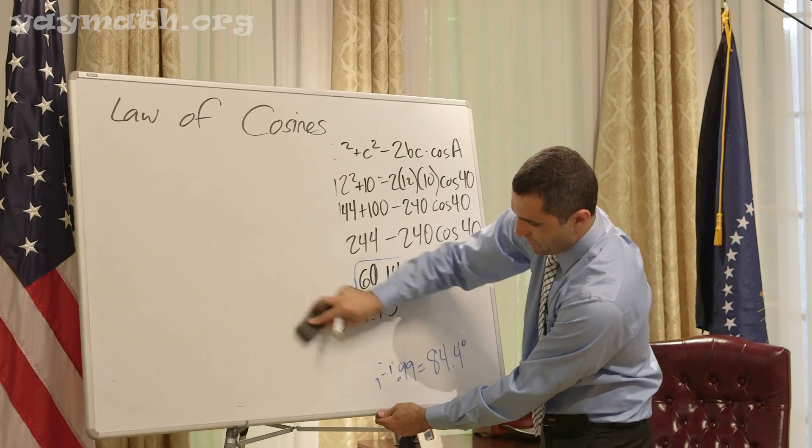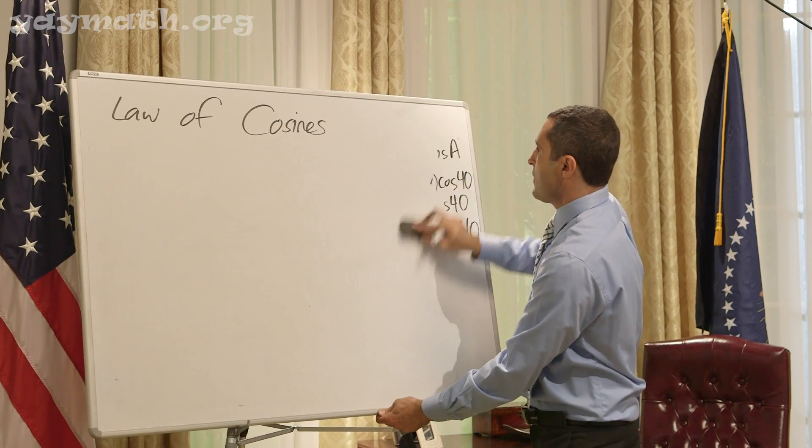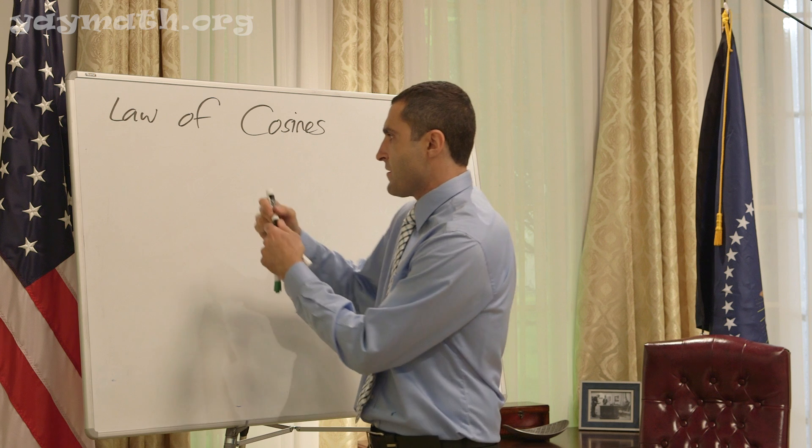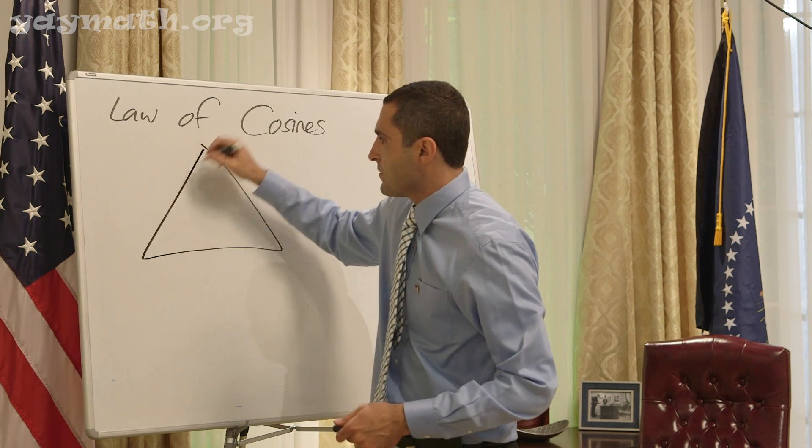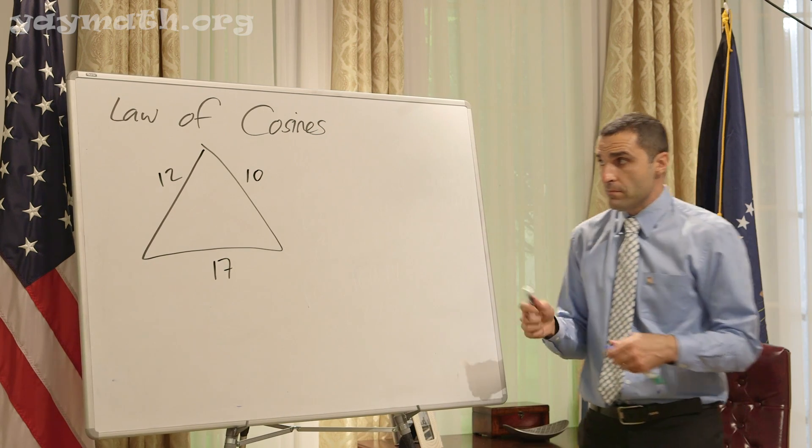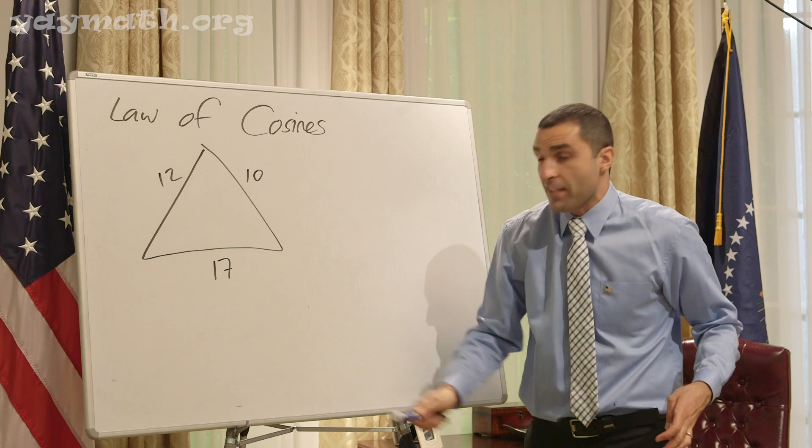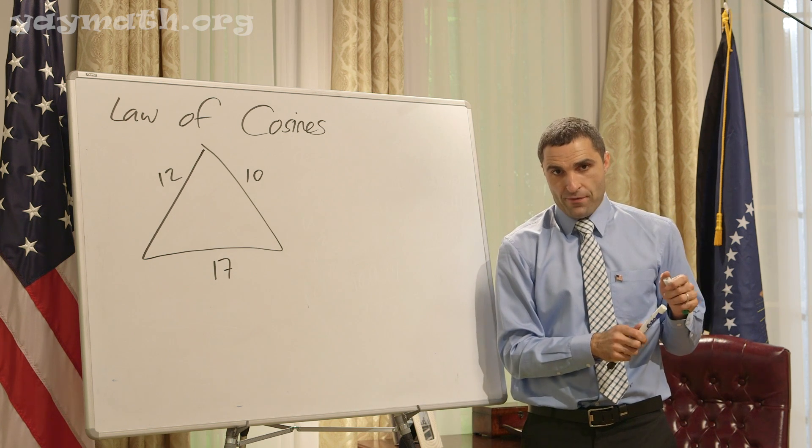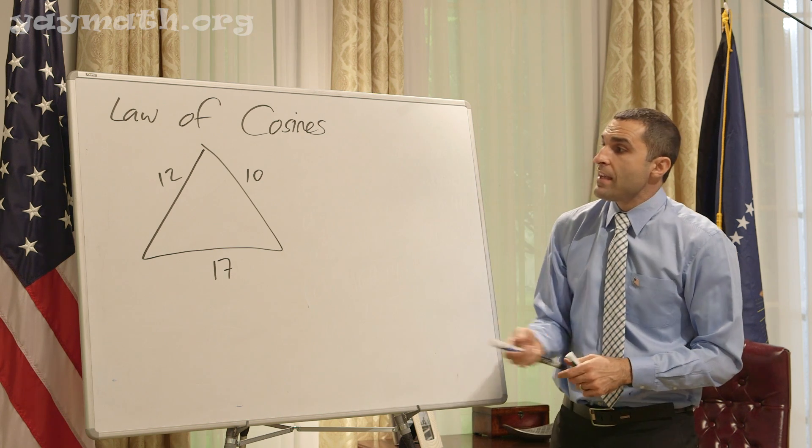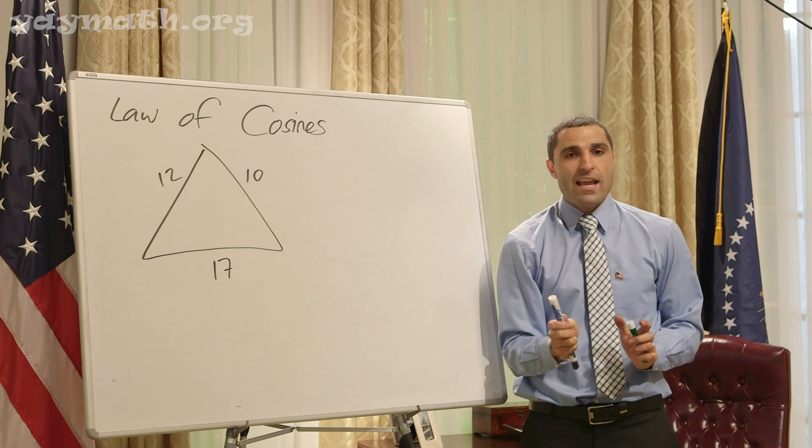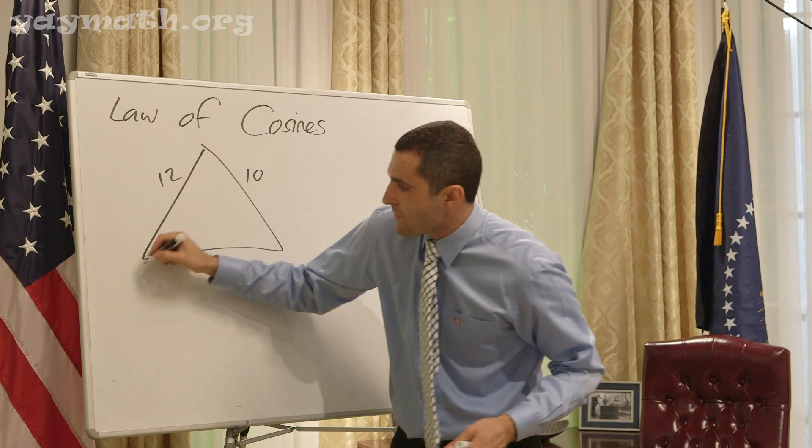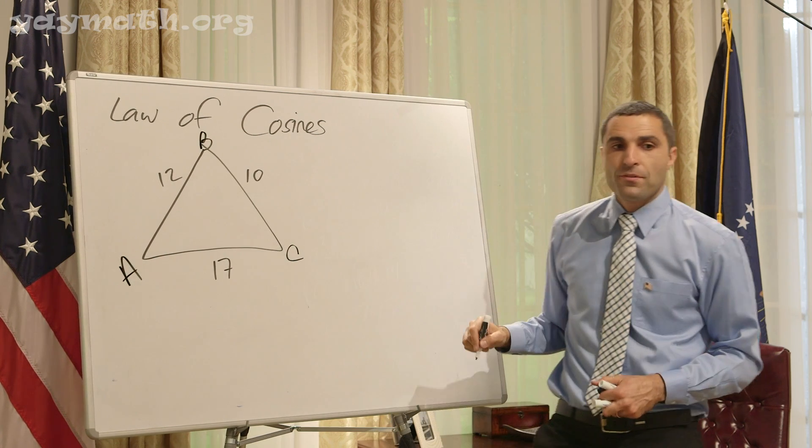There's another situation where we can't use Law of Sines. Give me three sides of a triangle. 12, 10, 17. If I gave you three sticks—one 10 inches, one 12, one 17—how many triangles could you create? One. Could you use Law of Sines to get those angles? No. You get two variables, so you need to do Law of Cosines.